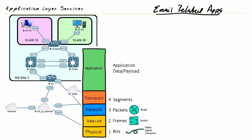Our next grouping of application layer services all relate to email. Some are for email servers, some are for email clients. When we talk about the TCP/IP protocol stack and say the word 'apps,' we're talking about application layer services — not a word processor or even an email client on a PC. Behind the scenes, an email client leverages email-related application layer services from the TCP/IP protocol suite.